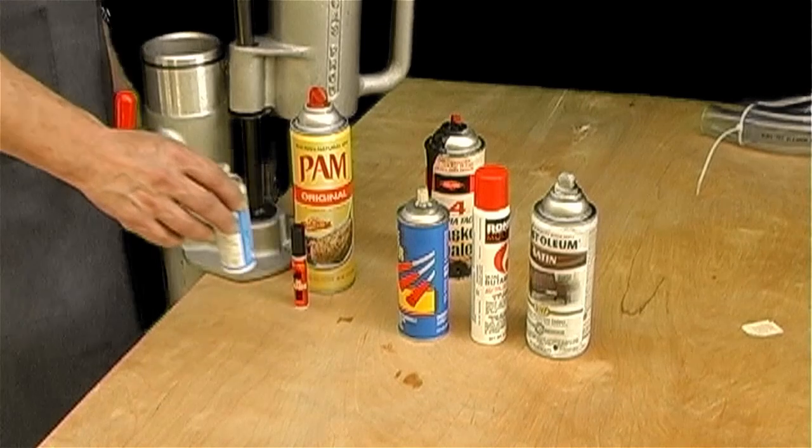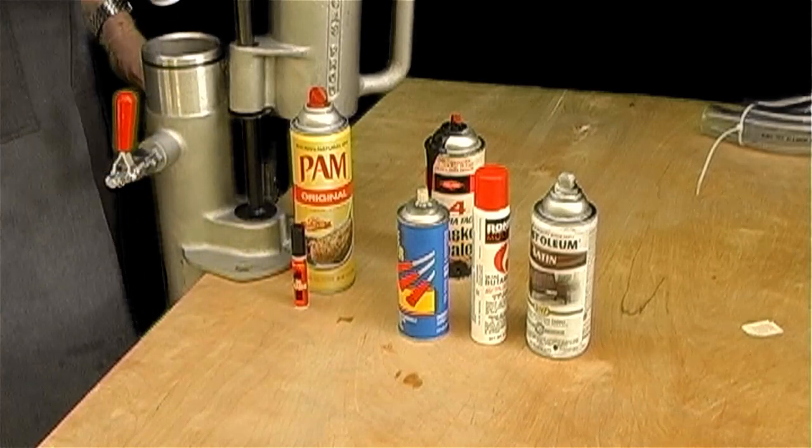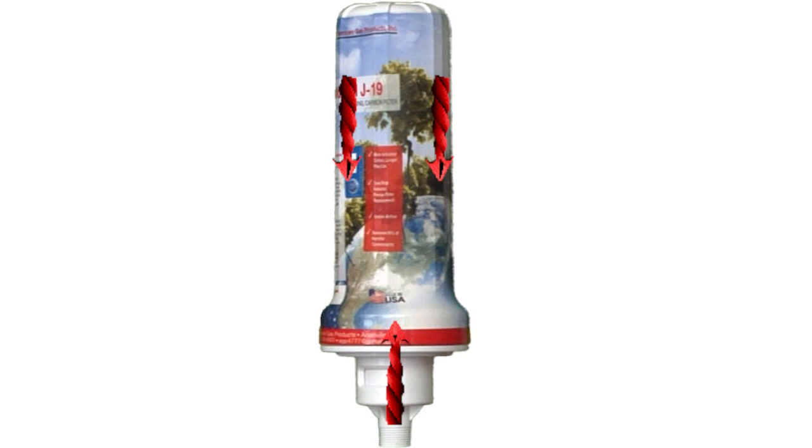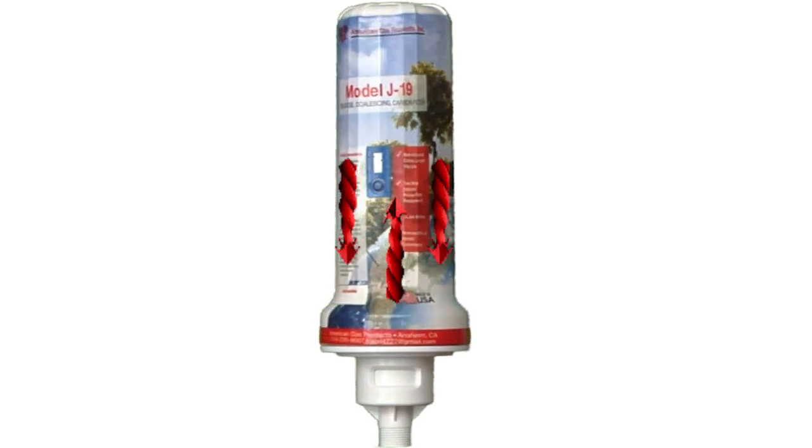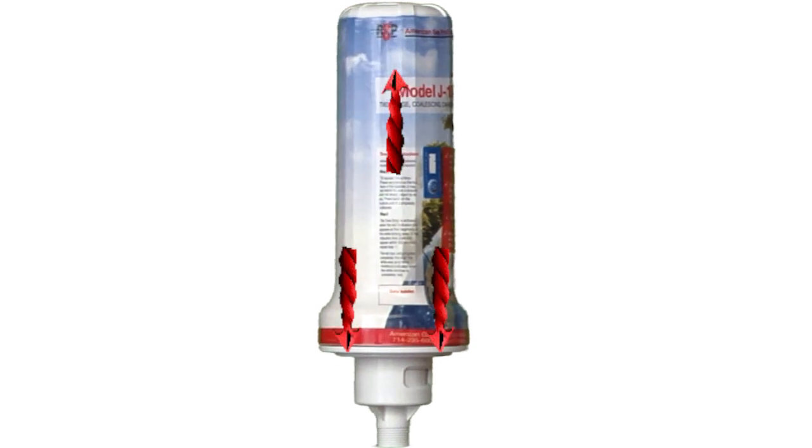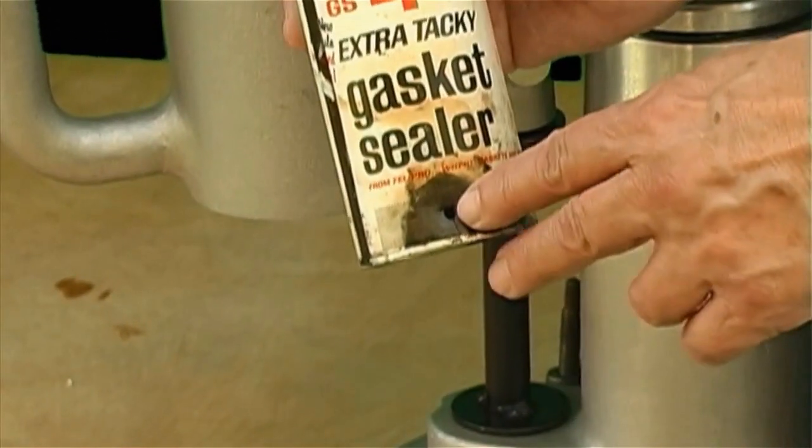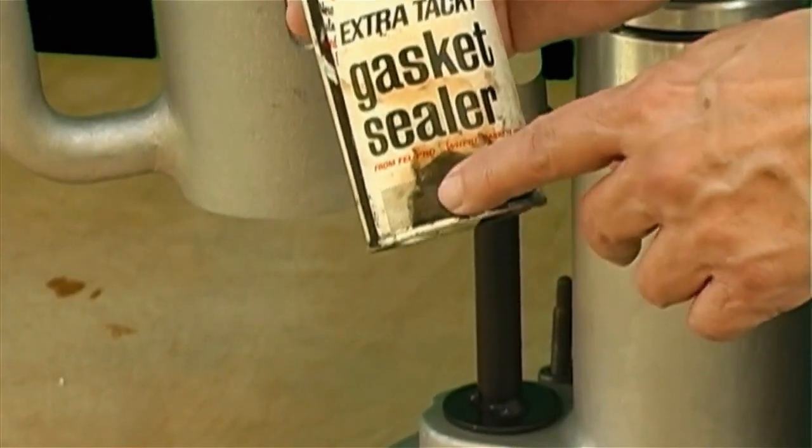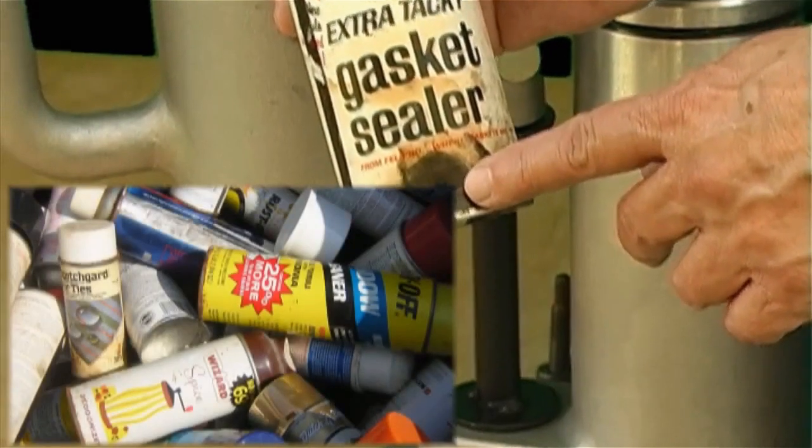After the aerosol spray can is punctured, the liquid and propellants are expelled directly into the drum. The propellants, hydrocarbons, and airborne particles are then channeled through the filter where they are absorbed. Once this has taken place, the can is rendered harmless, non-explosive, and environmentally safe to recycle or discard.